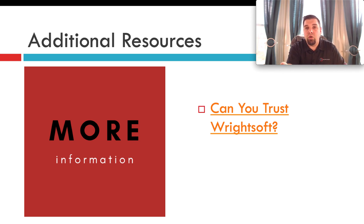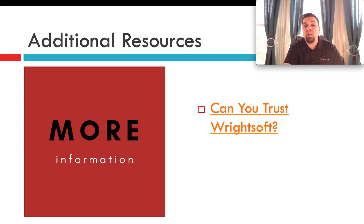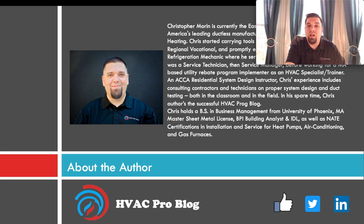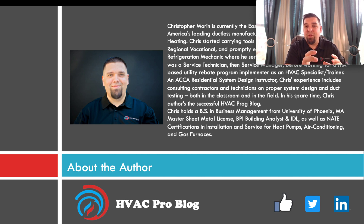All of these software programs give you the same output: ACCA Manual J Version 8 takes everything into account and gives you heat loss and heat gain — latent and sensible — which is what you need to select the right size equipment. Take a look at those additional resources, and if you have any questions, hit me up on social media — Facebook, Twitter, and LinkedIn. Thanks for sticking in there with me. I look forward to continuing on and explaining the design process in future modules.